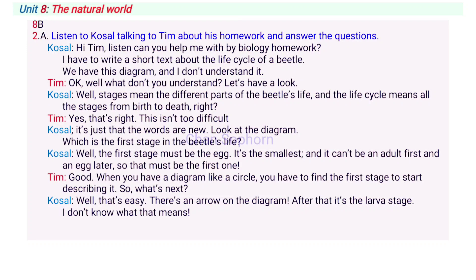And the life cycle means all the stages from birth to death, right? Yes, that's right. This isn't too difficult, Casal. It's just that the words are new. Look at the diagram. Which is the first stage in the beetle's life? Well, the first stage must be the egg. It's the smallest and it can't be another first and an egg later. So that must be the first one. Good. When you have a diagram, like a circle, you have to find the first stage to start describing it. So, what's next? Well, that's easy. There's an arrow on the diagram.